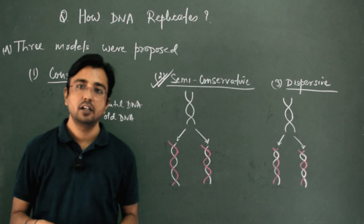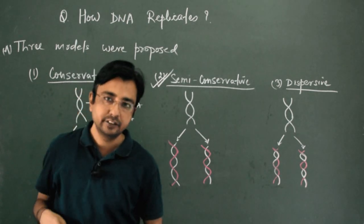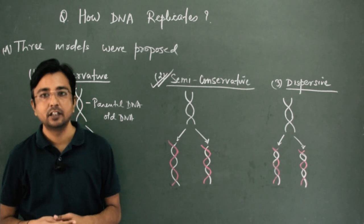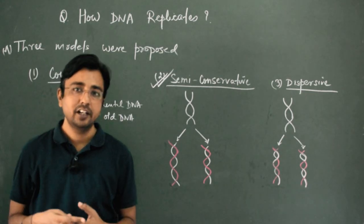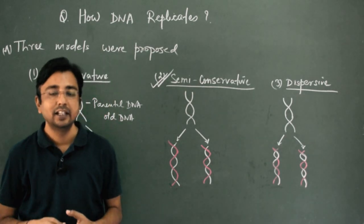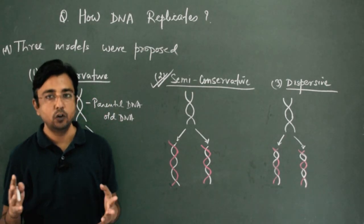In this lecture, we will be discussing about how DNA replicates. At this point of time we know how DNA replicates. But when Watson and Crick gave the three-dimensional model of DNA in 1953, they did not know how DNA duplicated.